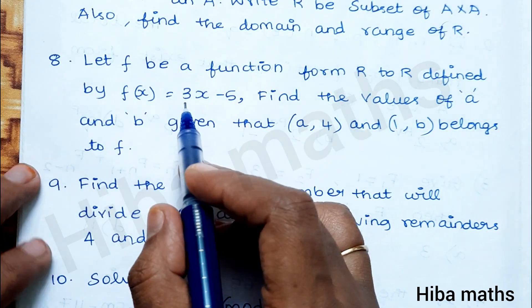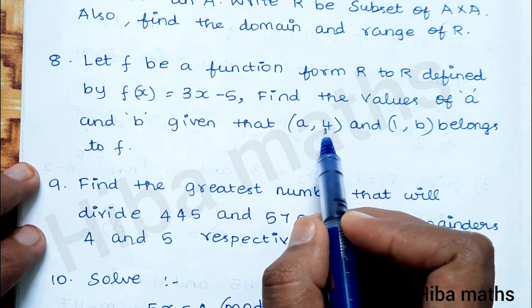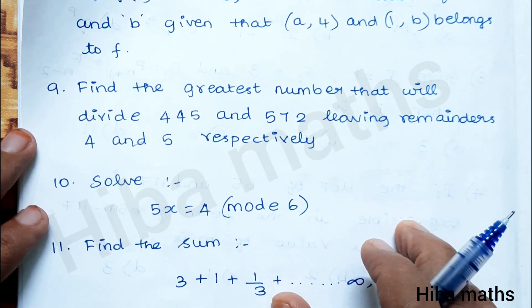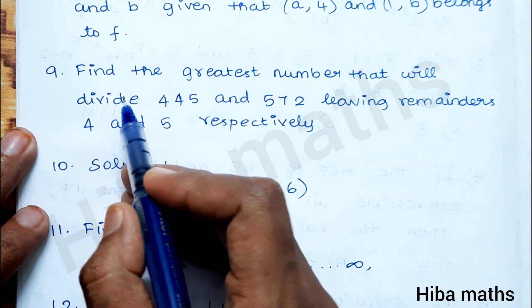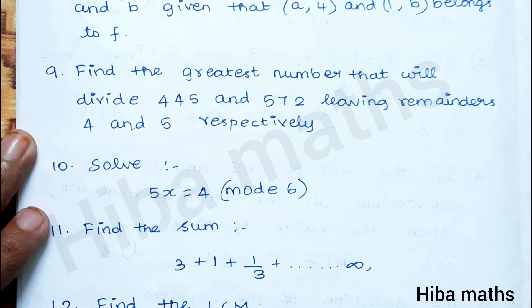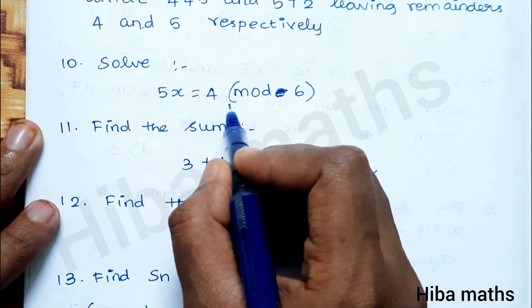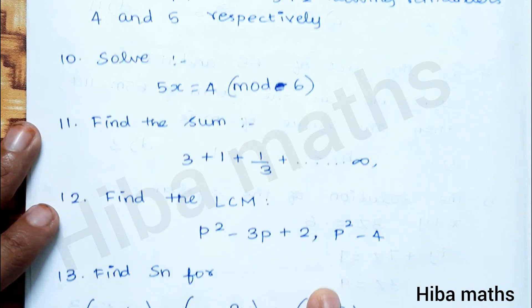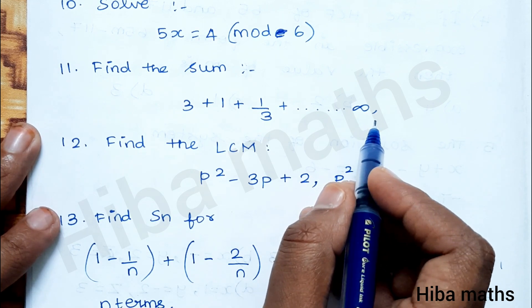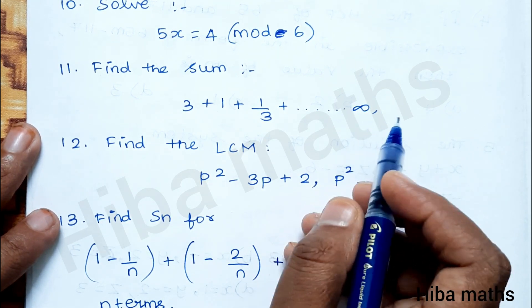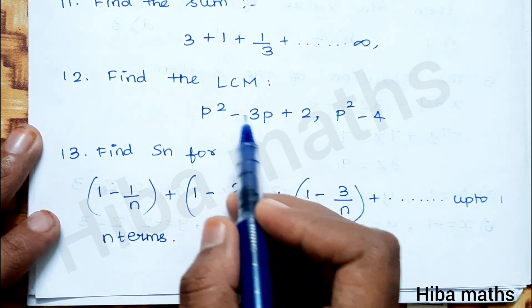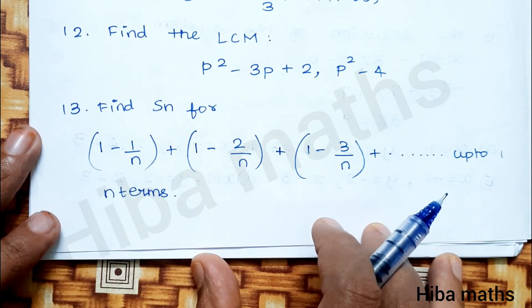The second sub-question: f of x — we will give 2 terms. Substitute for x, then solve using the elimination method. Find the greatest number that will divide 445 and 525, leaving a remainder — minus the remainder and put it in HCF. Solve: 5x ≡ 4 mod 6. Find the sum up to infinity — summation to infinity is the main question. Find LCM by factorizing using the a² minus b² formula.